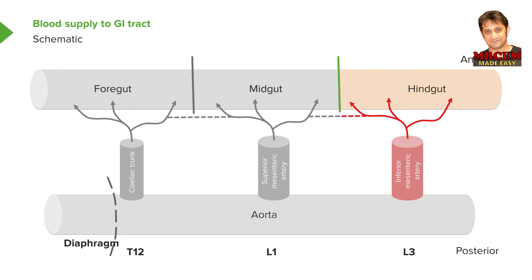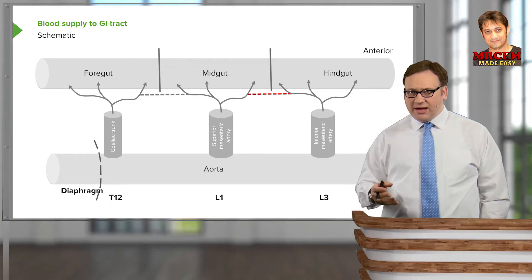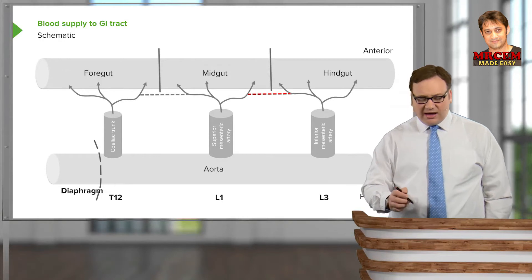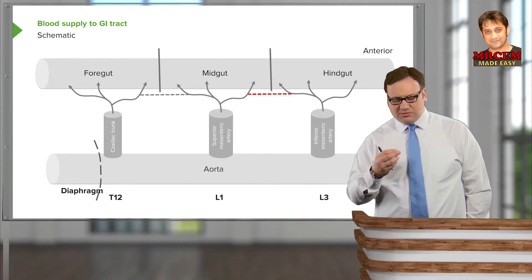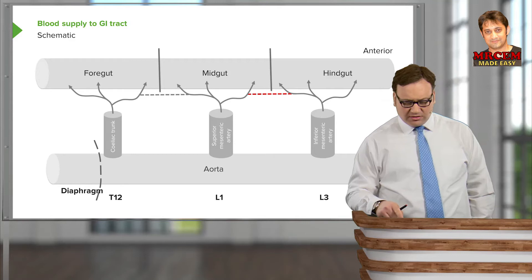The dotted lines represent transitions between the blood supply to the foregut and midgut — seen at the superior and inferior pancreaticoduodenal arteries at the head of the pancreas and duodenum. Between the midgut and hindgut, we have the transition forming the marginal artery, with inputs primarily from the middle colic and left colic arteries — the middle colic from the superior mesenteric and the left colic from the inferior mesenteric artery. We'll look at the specific branches from the celiac trunk, superior mesenteric artery, inferior mesenteric artery, and also consider those transitions.